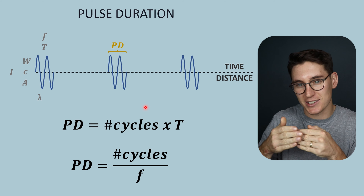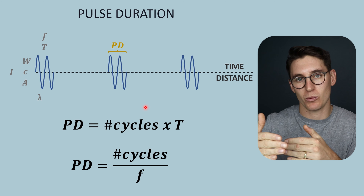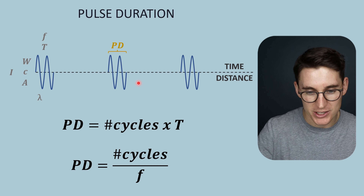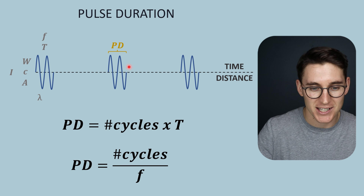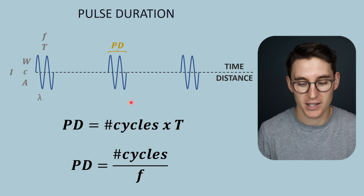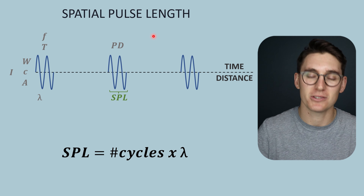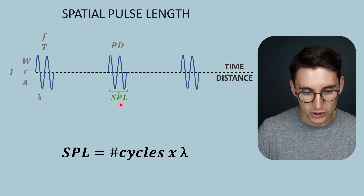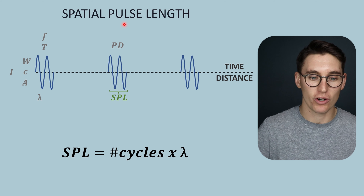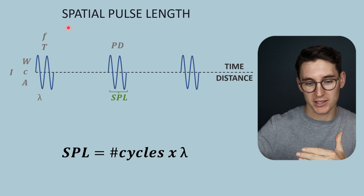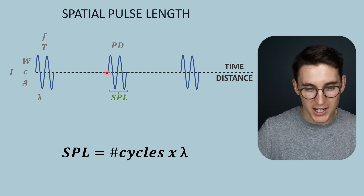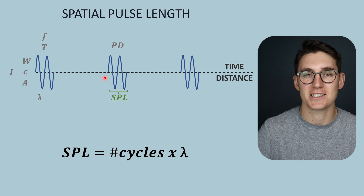Pulse duration represents the transmit time — the time that the ultrasound is actually generating an ultrasound wave. We then pause and wait for echoes to come back during the receive time. The next value is what is known as the spatial pulse length — a distance measurement. It's the length of our pulse as it moves through space, calculated as the number of cycles within our pulse multiplied by the wavelength of a single wave. This is the distance from the start of our pulse to the end of our pulse.